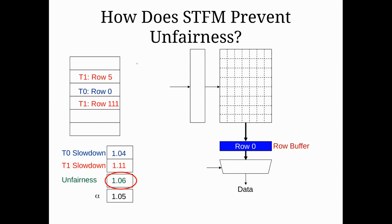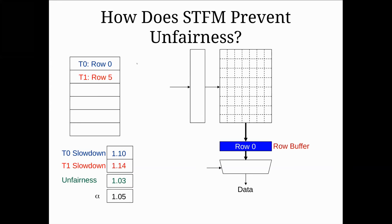That is where we ended. We can effectively keep track of how unfair our memory accesses are and calculate an approximate slowdown for each of the different threads, then try to equalize that slowdown and distribute it across all threads. That allows us to more effectively give each thread the ability to progress.